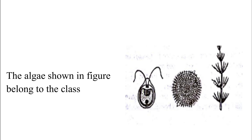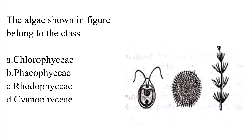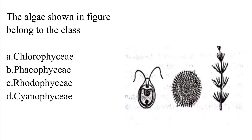The algae shown in figure belongs to the class Option A: Chlorophyceae. Option B: Phaeophyceae. Option C: Rhodophyceae. Option D: Cyanophyceae. The correct answer is Option A, which is Chlorophyceae.